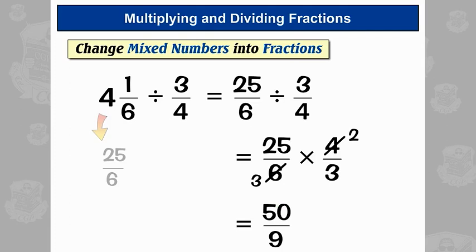We could write that as a mixed number. To do that, we divide top by bottom: 50 divided by 9. Well, 9 fives are 45, and we have 5 left over — so that's a remainder of 5. We put down our 5, and then the remainder goes over the number on the bottom of the fraction. So it's 5 and 5 ninths.